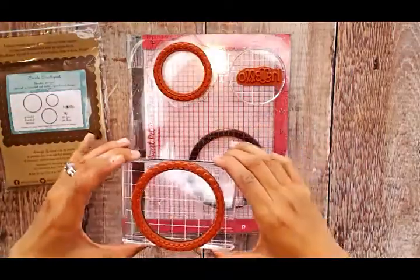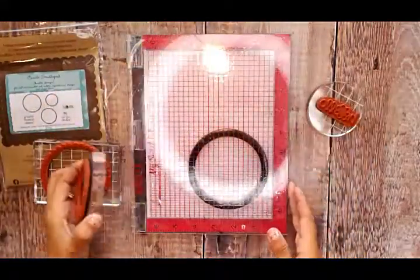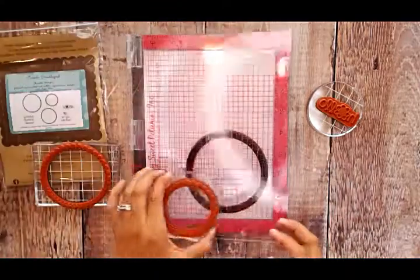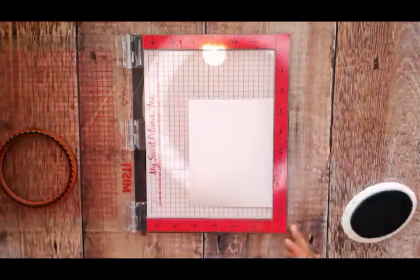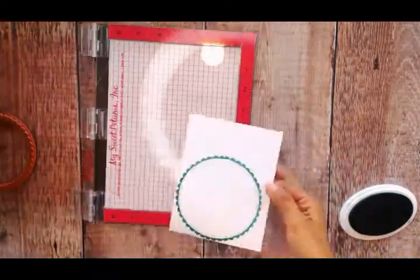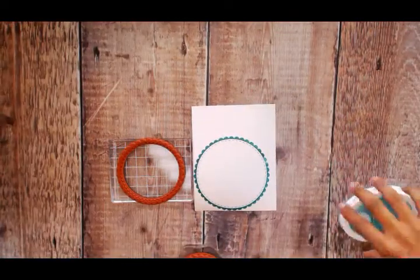I'm going to be using the hello sentiment and the largest circle positioned in my MISTI. Let's get started! We're going to begin by using Catherine Pooler's Aqua Teeny ink on the bottom left of our card panel.